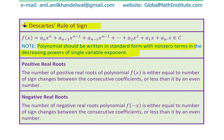The number of positive real roots of polynomial f(x) is either equal to the number of sign changes between consecutive coefficients, or less than it by an even number. This gives us an idea of the maximum number of positive roots. If the number of sign changes is just 1 or 0, then the number of positive roots would be 1 or 0.